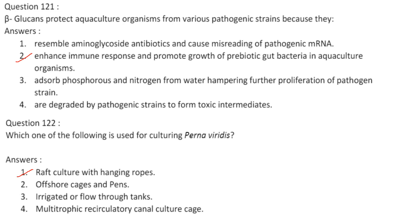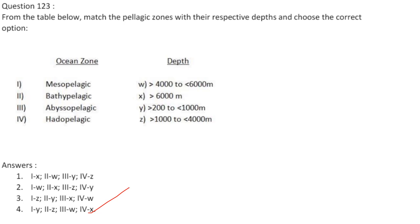Perna viridis is an edible mollusk, and raft culture with hanging ropes can be used for culturing it. Answer is option 1. Pelagic zone depths: mesopelagic 200–1000 m; bathypelagic 1000–4000 m; abyssopelagic 4000–6000 m; hadopelagic greater than 6000 m. The answer is option 4: 1Y, 2Z, 3W, 4X.